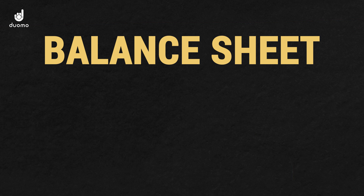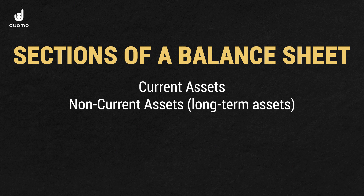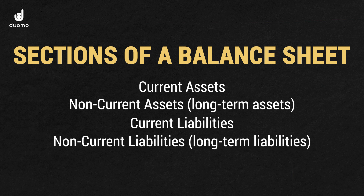The balance sheet is split into five sections: current assets, non-current assets (also known as long-term assets), current liabilities, non-current liabilities (also known as long-term liabilities), and equity, which is also known as shareholders' equity or shareholders' funds.